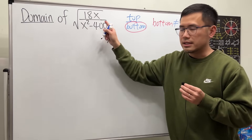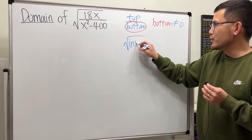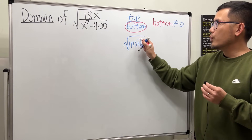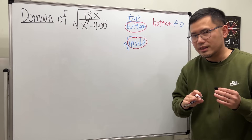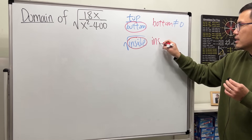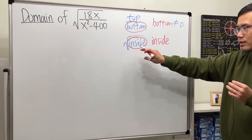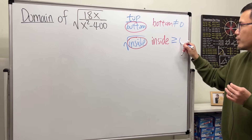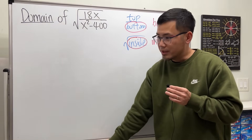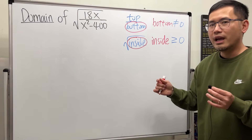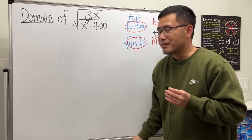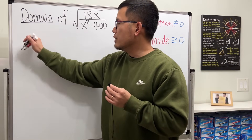Next, look at the inside of the square root. Because we are dealing with real numbers, we have to make sure the inside cannot be negative. So write down the expression inside and set it greater than or equal to zero, then solve that inequality. Since we have two conditions, we must handle both and find the interval that satisfies both.